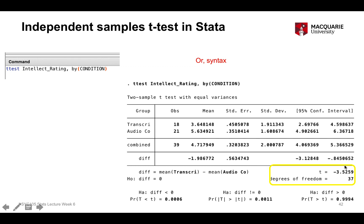We then get our t-statistic of negative 3.52, which is the same as our hand-calculated value. It's negative here simply because Stata assigned groups in the opposite order from how we did it — which makes absolutely no difference. The sign of the t-statistic is irrelevant; the magnitude is what matters.